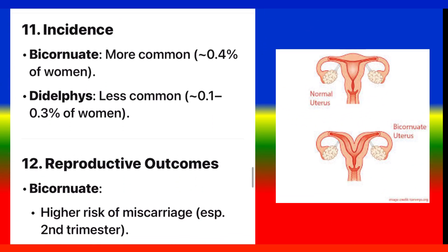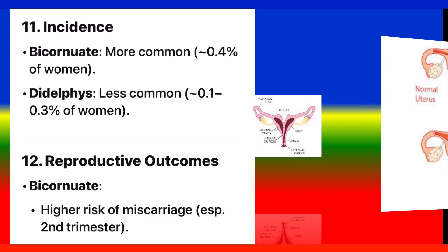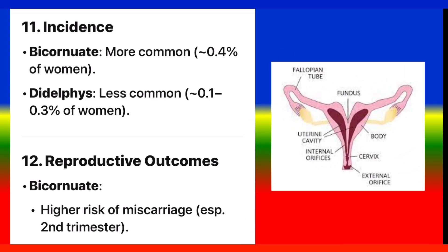Point 11: Incidence. Bicornuate: more common, affecting up to 0.4% of women. Didelphys: less common, approximately 0.1% to 0.3% of women.